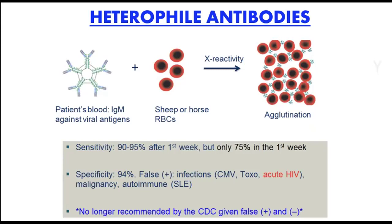Examples of tests for heterophile antibodies are the monospot test and the Paul Bunnell test. The Paul Bunnell test is a very old test — almost 50 years old — but still of fundamental importance in the diagnosis of infectious mononucleosis. Both tests work similarly; the difference is that Paul Bunnell uses sheep's blood while monospot uses horse blood.